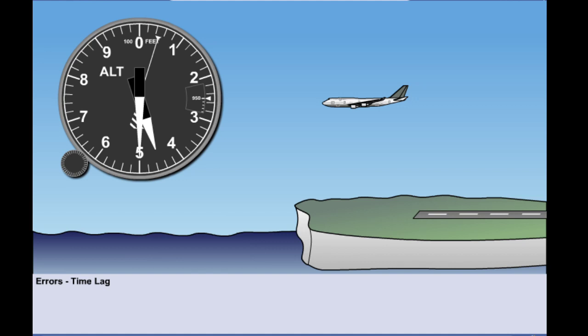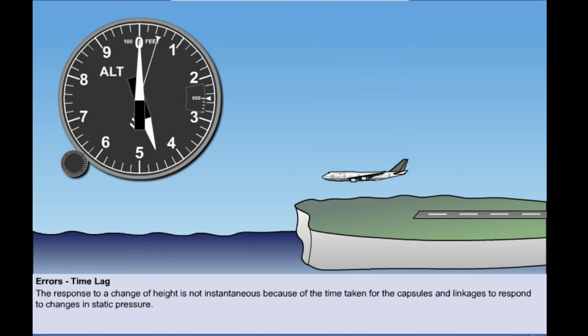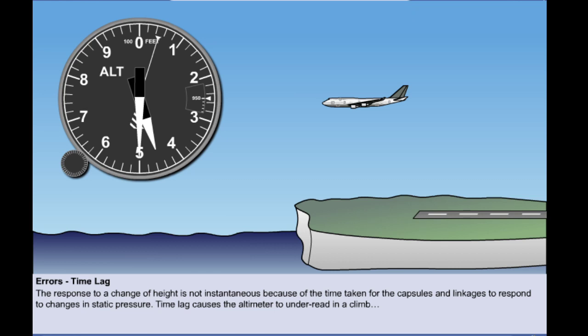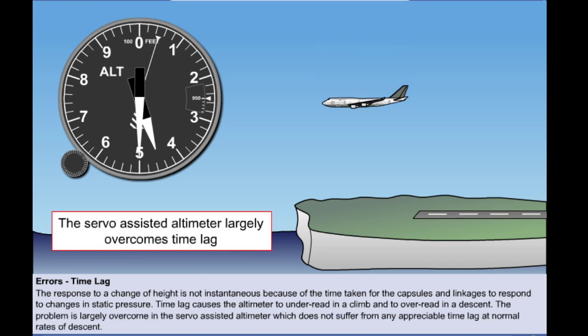The fourth error to look at is time lag. With many types of altimeter the response to a change of height is not instantaneous because of the time taken for the aneroid capsules and linkages to respond to changes in static pressure. This time lag is most noticeable when the change in altitude is prolonged and rapid, and causes the altimeter to under-read in a climb and to over-read in a descent. The problem is largely overcome in the servo-assisted altimeter which does not suffer from any appreciable time lag at normal rates of climb and descent.